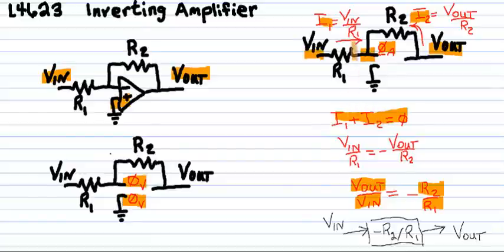Substituting for I one and I two, forming the ratio V out over V in, we find the transfer function is negative R two over R one.